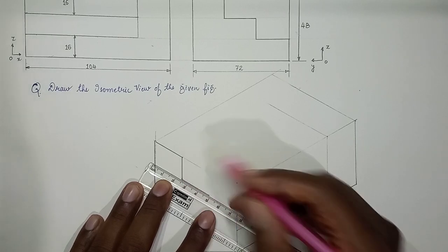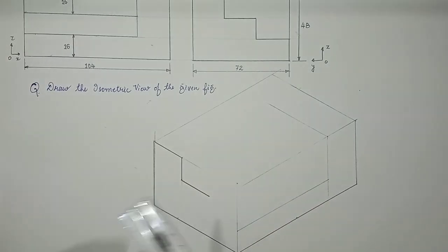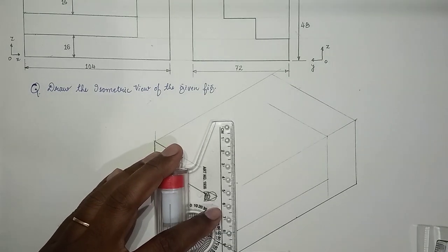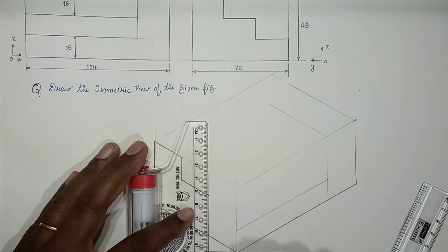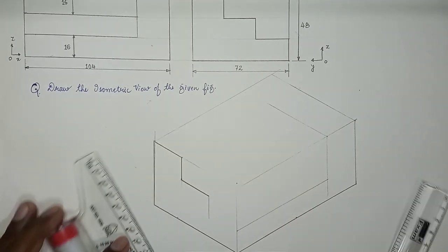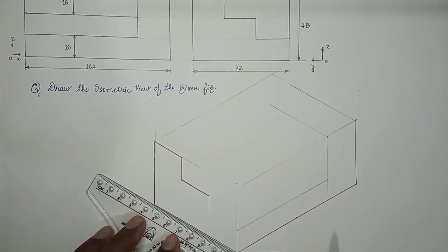And again along z-axis we need to come down, so we draw a line parallel to z-axis and we can bring this line extension.